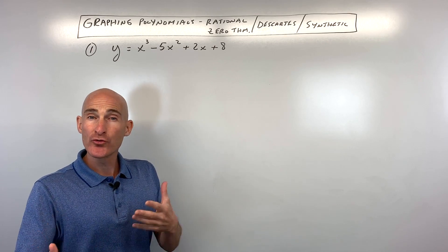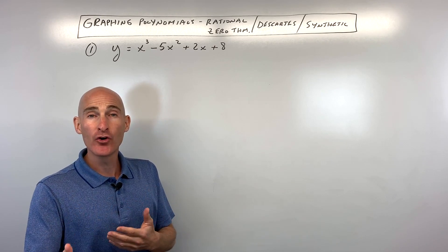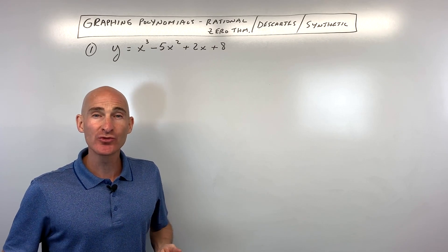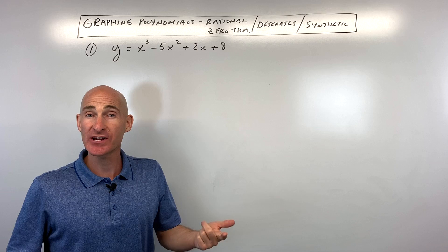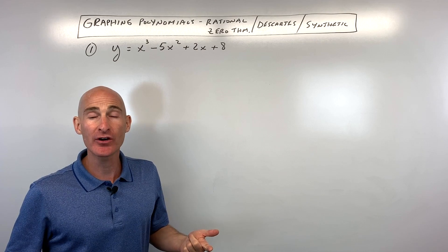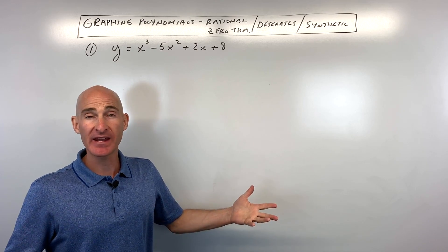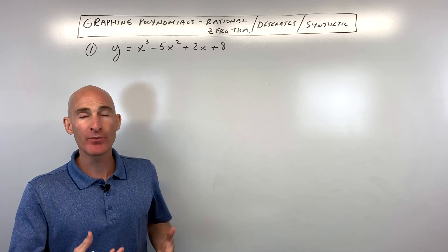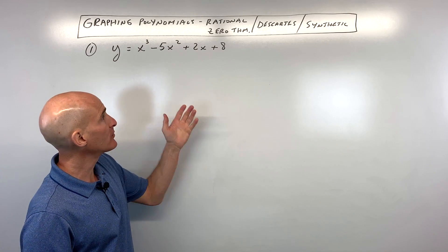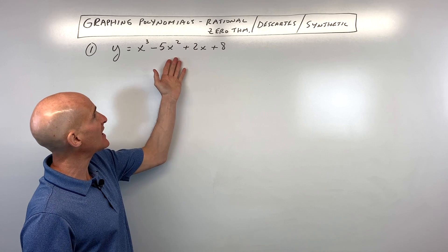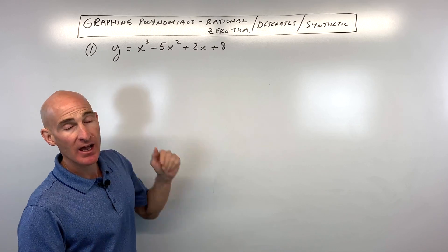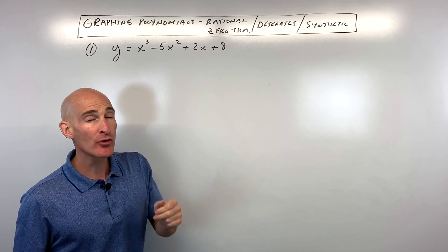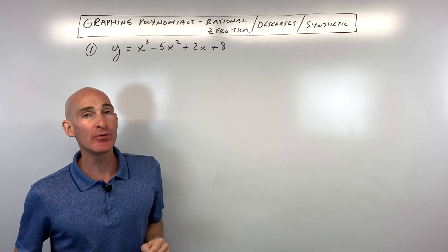In this lesson, we're going to go through graphing polynomials using Descartes' rule of signs, the rational zero theorem, synthetic division, and we're going to put all these components together to help get a pretty good sketch of this graph. So we're going to go through two examples.